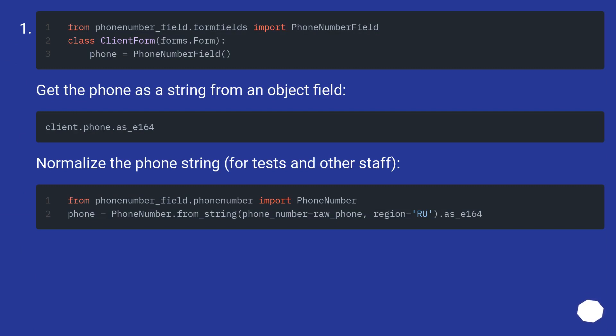Get the phone as a string from an object field. Normalize the phone string for tests and other tasks.